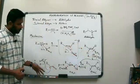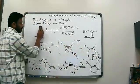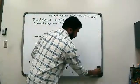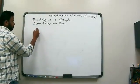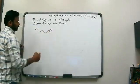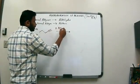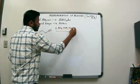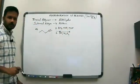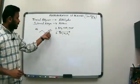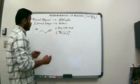Then we have the enol tautomerizing to the keto form, which is the carbonyl in this particular case. Let's look at a few examples. If we have an alkyne and do hydroboration — BH3/THF with THF as solvent, then base with H2O2 — the more substituted carbon becomes a CH2 and the less substituted terminal carbon becomes the aldehyde.